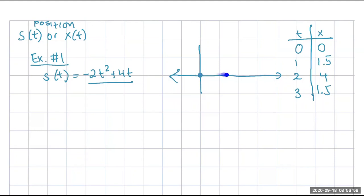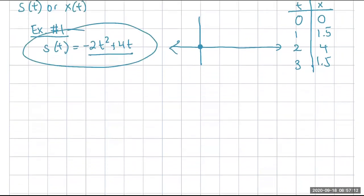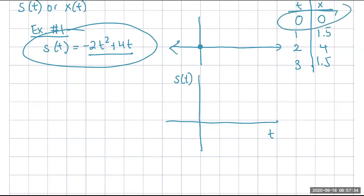The particle can move right or left. This is the physical motion of the particle. Now if I incorporate time into this and graph it as a normal function — time on the horizontal axis, S of T (position) on the y-axis — plotting the points: (0,0), (1, 1½), (2, 4), (3, 1½), and at 4 it goes back down to 0. This is what your graph looks like when you incorporate time as a second variable.